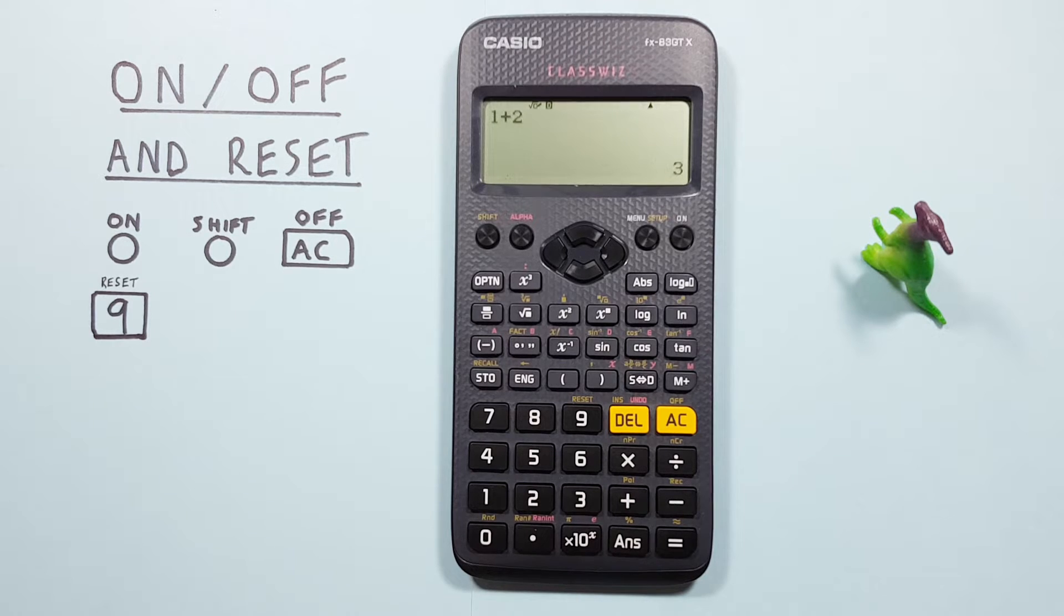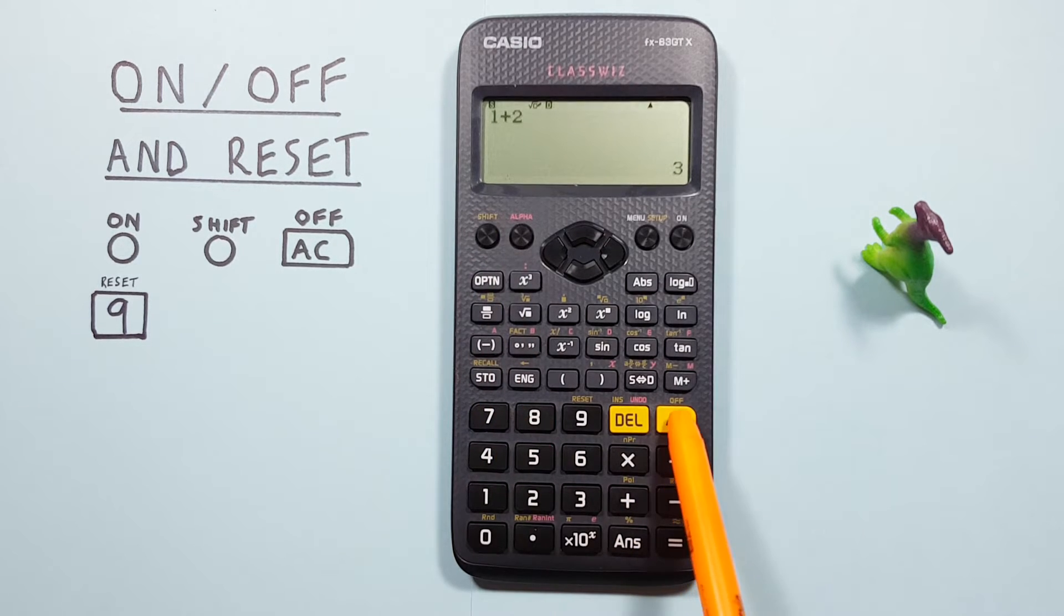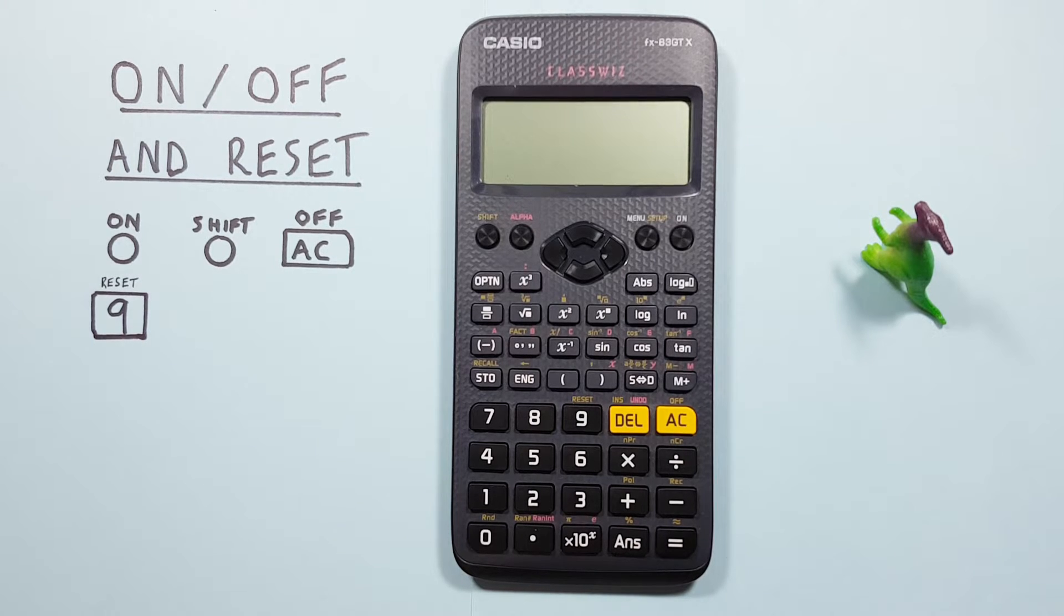If we're done working with our calculator and want to turn it OFF, we can do this by pressing SHIFT AC. Our screen will go blank, and our calculator will be saving its battery, so it'll last longer for us.